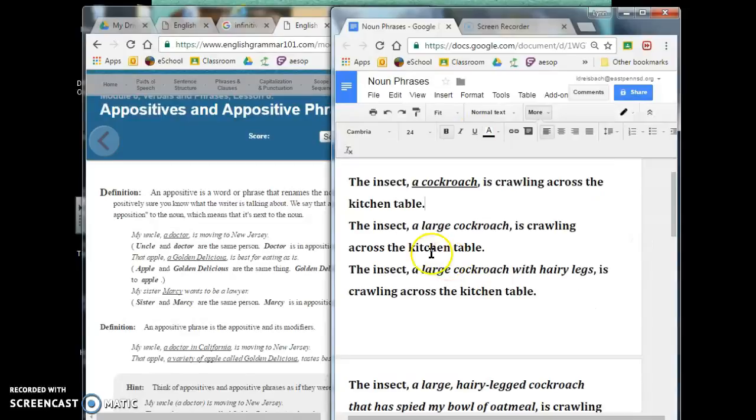In the next sentence, though, the insect, a large cockroach, is crawling across the kitchen table. That's an appositive phrase. Not an appositive. It's an appositive phrase because it includes the adjective large, which is telling us about the cockroach.